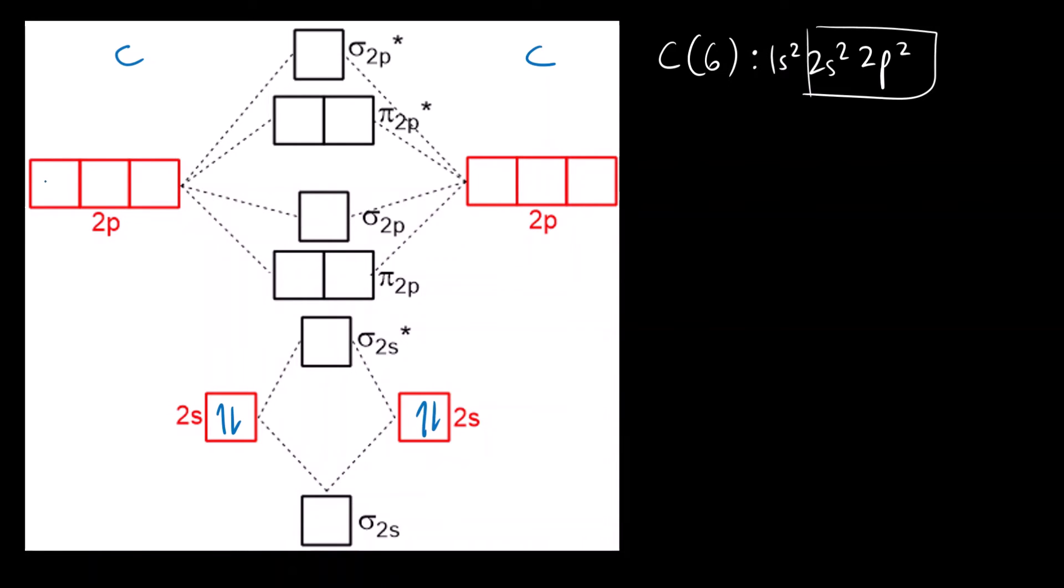We fill electrons one, two, three, four, five, six into singly occupied orbitals, then start pairing: seven, eight. All eight electrons are now filled in the molecular orbitals.